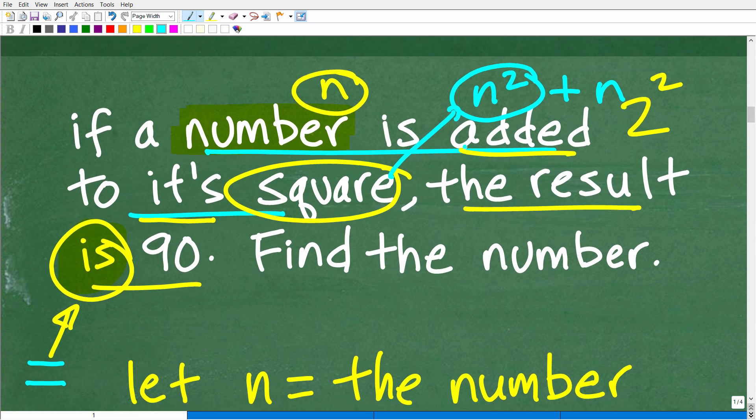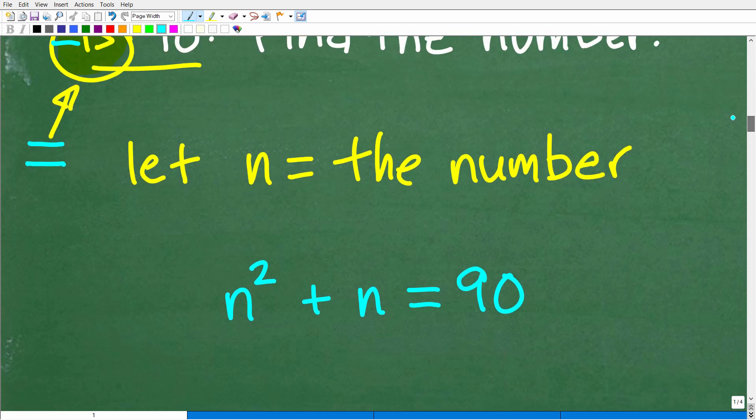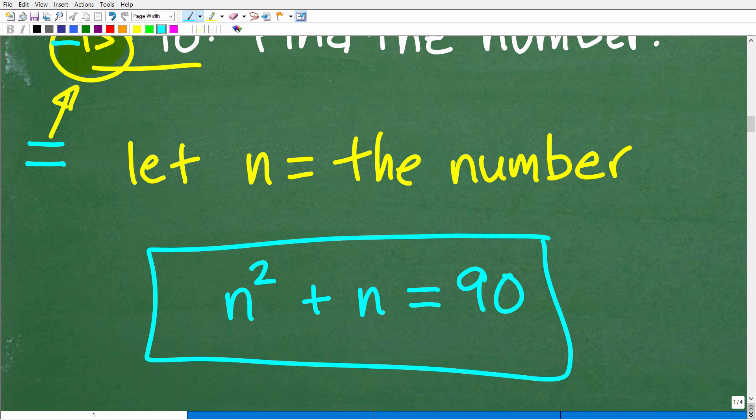I'll say that one more time. If a number is added to its square, we've got to start with the square first. So N squared is that number squared, and then we're going to add the number. The result is 90. Or that whole thing, N squared plus N, is equal to 90. Now we took that verbal situation and translated it into a lovely algebraic equation.